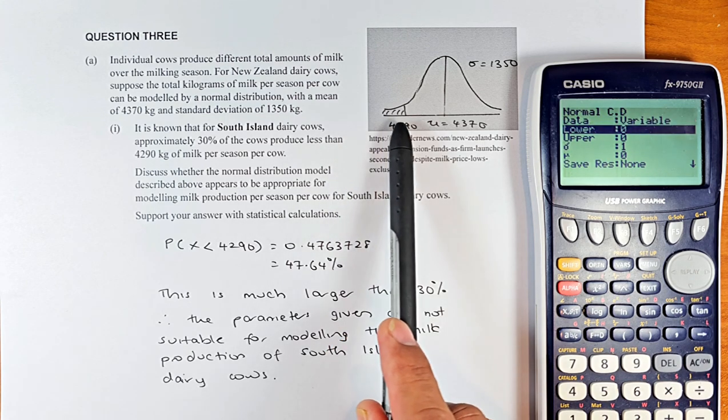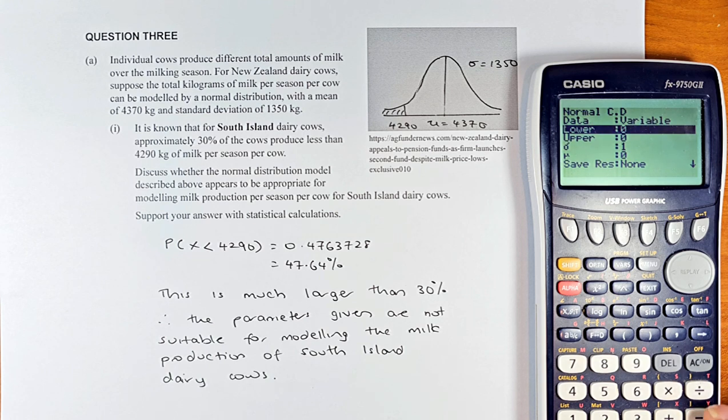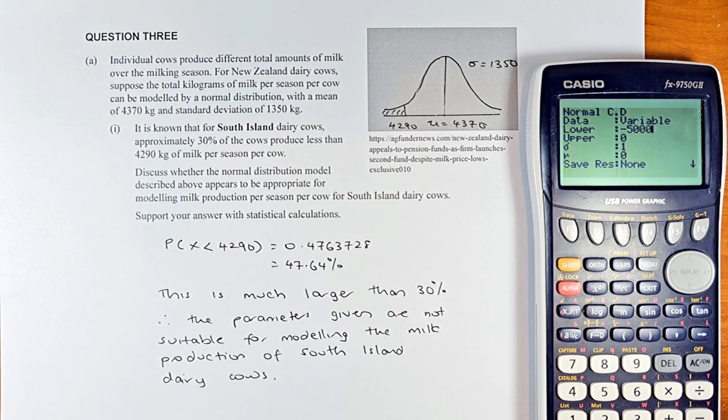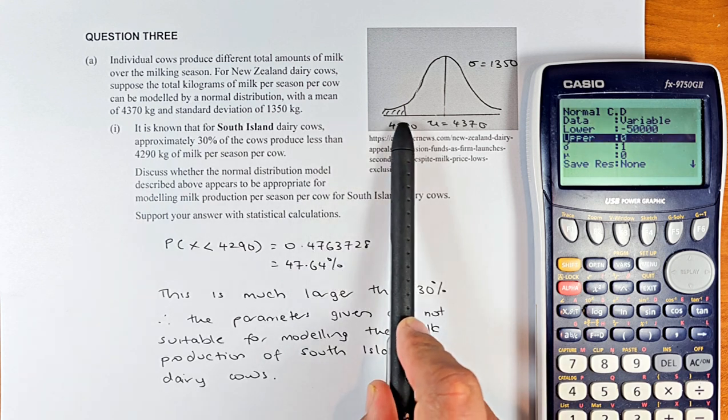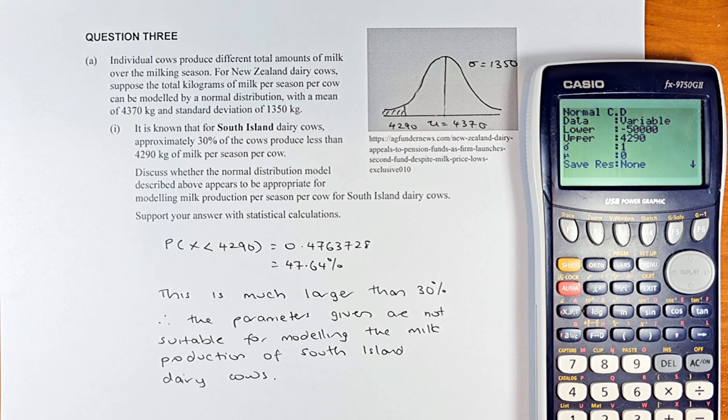So lower is the start of the area, it is anywhere along here. So it could be any number. I would put minus 5,000 or you can put minus 50,000, doesn't matter. Upper is where it is going to end and the probability ends at 4290. So we are going to put 4290, execute.